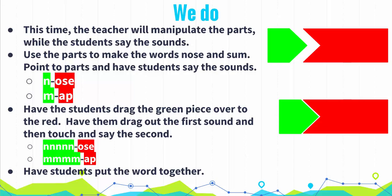The next section is the We Do, where the teacher guides students through practice of the skill. Tell the students the sounds, such as 'N' and 'oz.' Then have each student say the sound as the teacher moves the pieces. If the word is 'nose,' the student points to the green piece and says 'N,' then points to the red and says 'oz.' The teacher drags the green piece as the student says 'N,' then points to the red as the student says 'oz,' and finally puts the parts together: 'N... oz... nose.' Repeat so that every student has at least one turn.